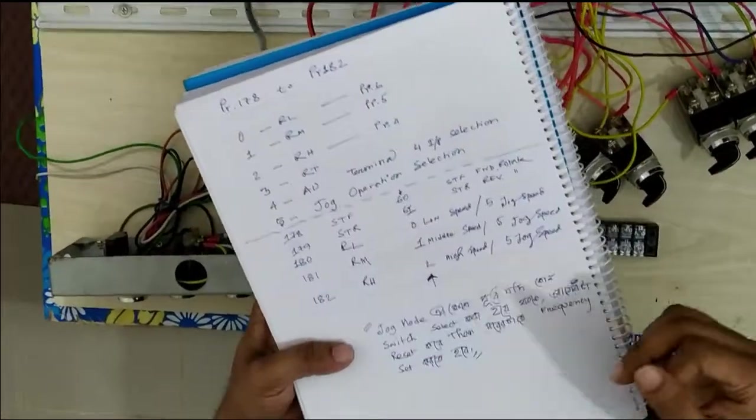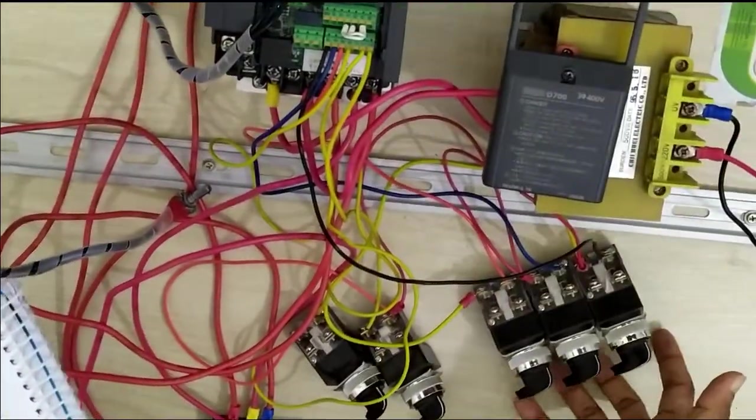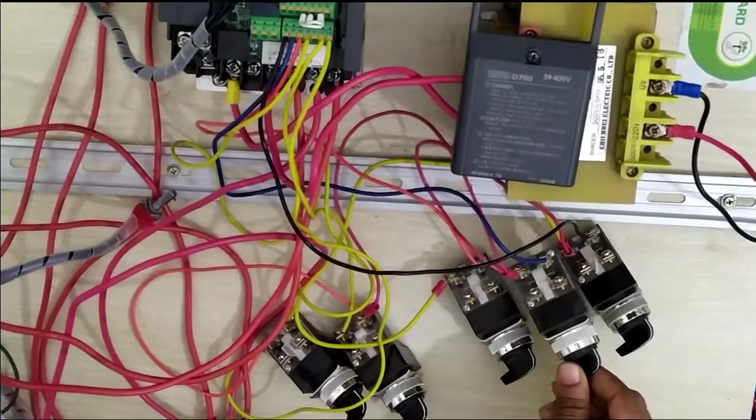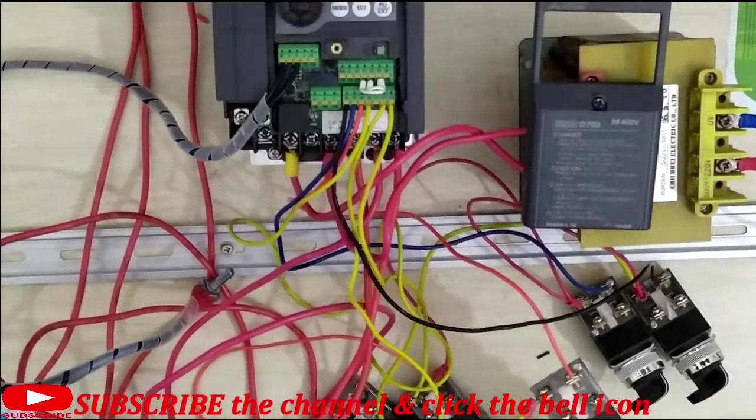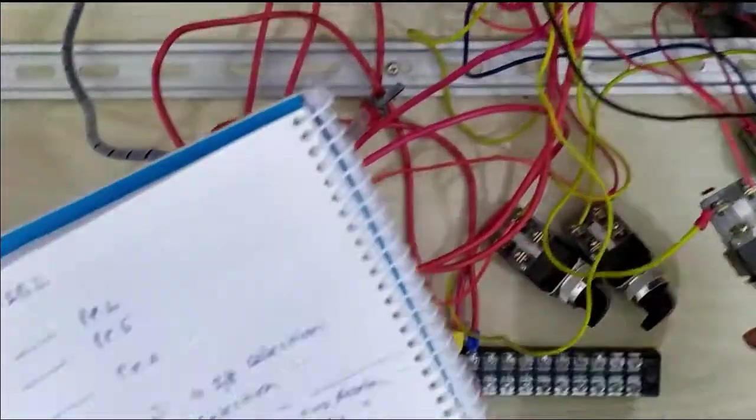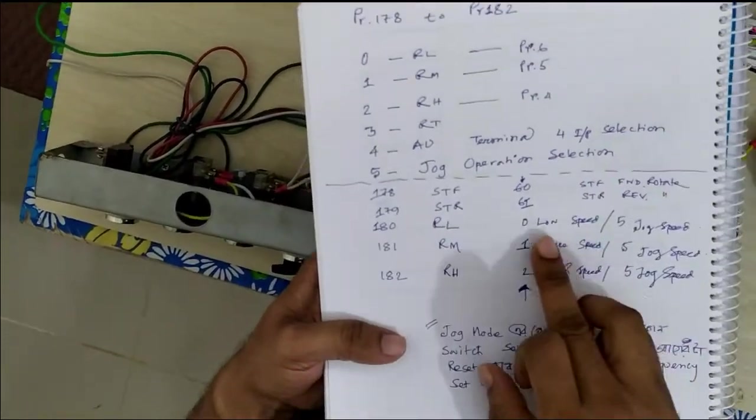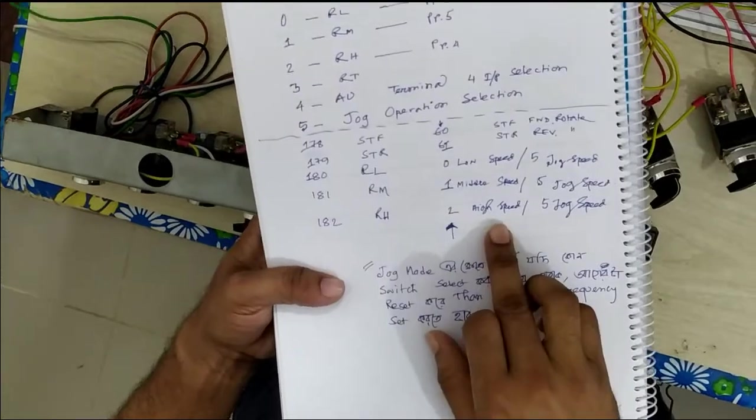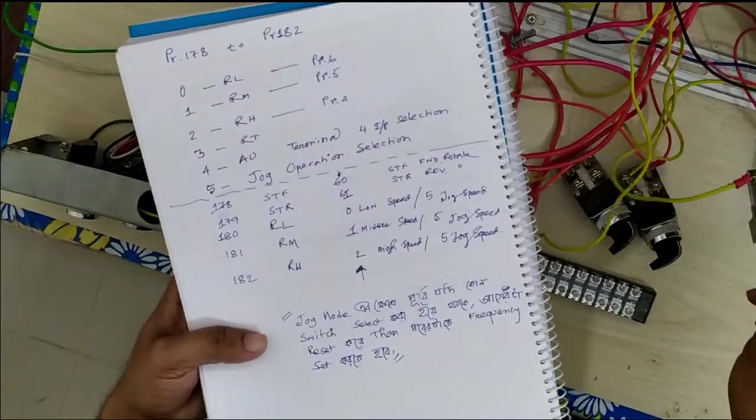There are three choices: RL, RM, and RH - that means high, medium, and low. I want to set the high speed. Parameter 182 is for high speed, 181 is middle speed, and 180 is low speed. Right now parameter 182 is set to 2, which means high speed.